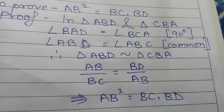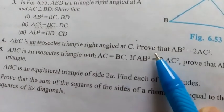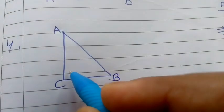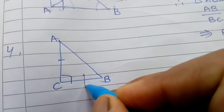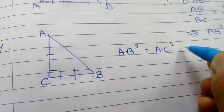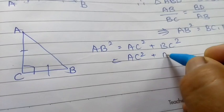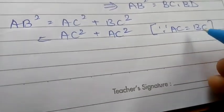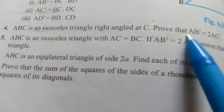Question number 4: ABC is an isosceles right triangle with right angle at C. Prove that AB² = 2AC². Since it is an isosceles right triangle, AC = BC. By the Pythagorean theorem: AB² = AC² + BC². Since AC = BC, we substitute: AB² = AC² + AC² = 2AC². Hence proved.